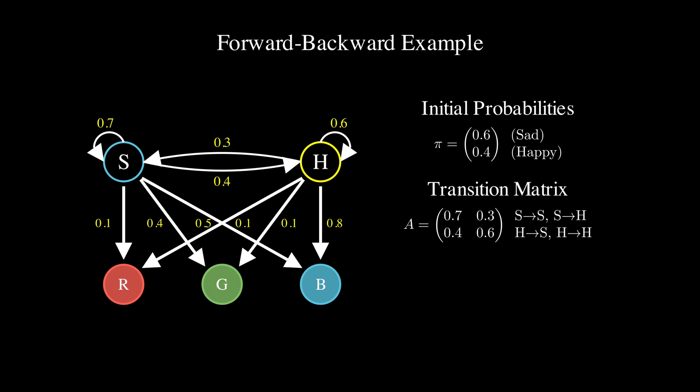And again, the transition matrix A tells us how likely we are to move between states, where we have a 0.7 probability of staying sad if we are already sad, a 0.3 probability of transitioning from sad to happy, a 0.4 probability of going from happy to sad, and a 0.6 probability of staying happy.